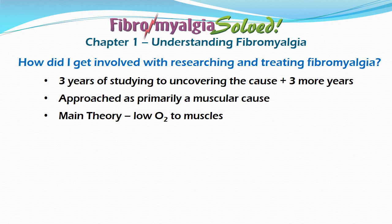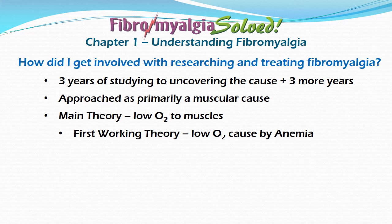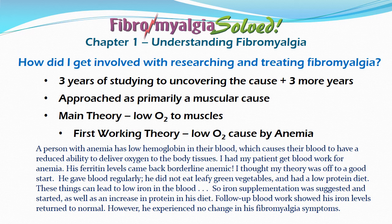My overriding theory was low oxygen to the muscles. My first working theory on what would cause a lack of oxygen reaching the muscles was anemia. A person with anemia has low hemoglobin in their blood, which causes a reduced ability to deliver oxygen to body tissues. I had my patient get blood work for anemia, and his ferritin levels came back borderline anemic. He gave blood regularly, did not eat leafy green vegetables, and had a low protein diet — all things that can lead to low iron, low hemoglobin, and low oxygen saturation.